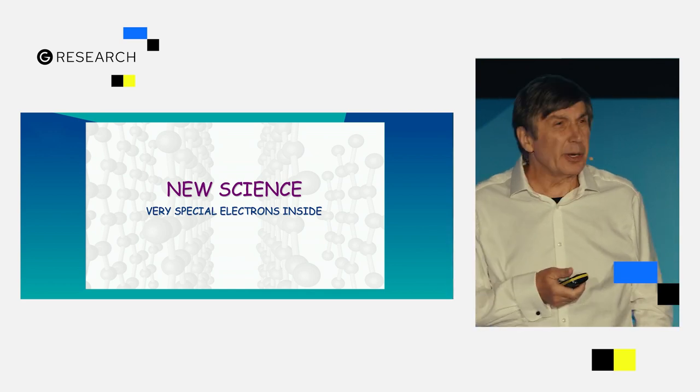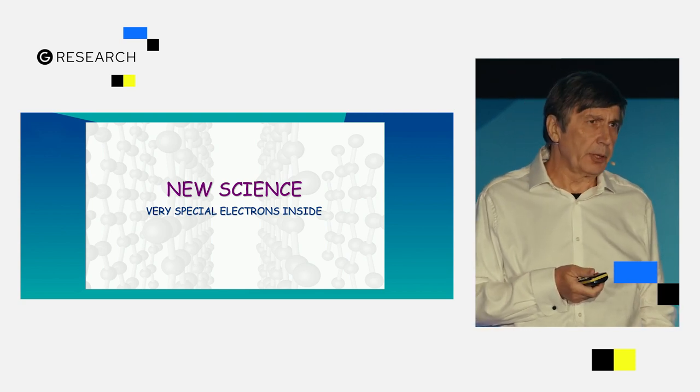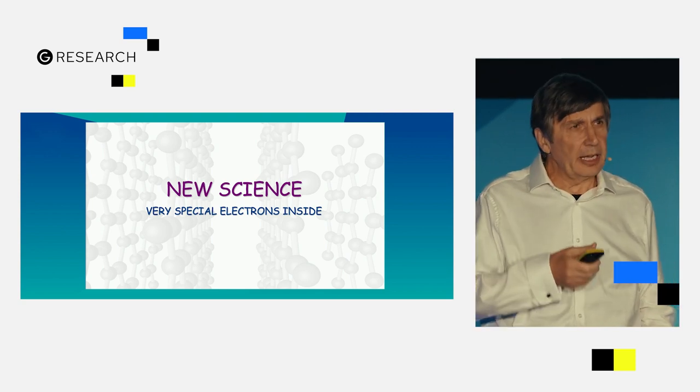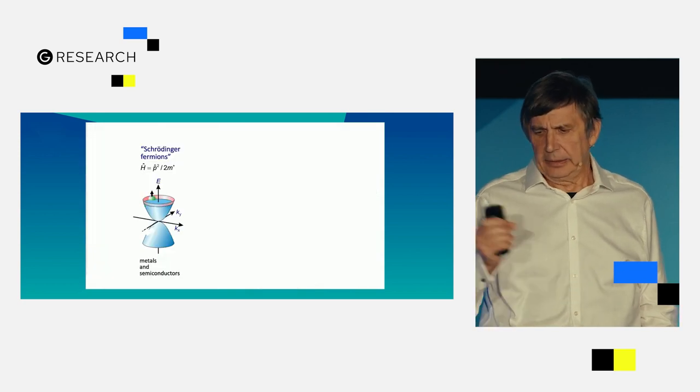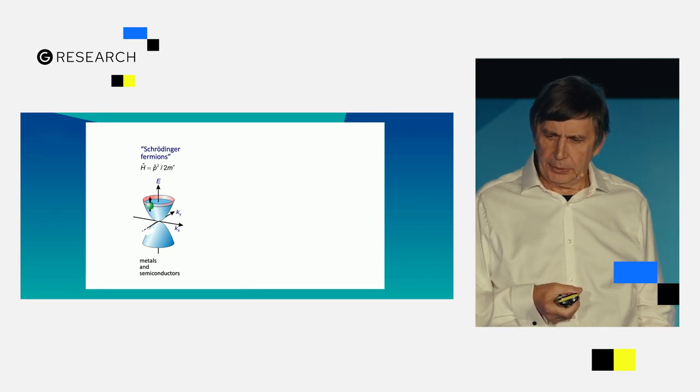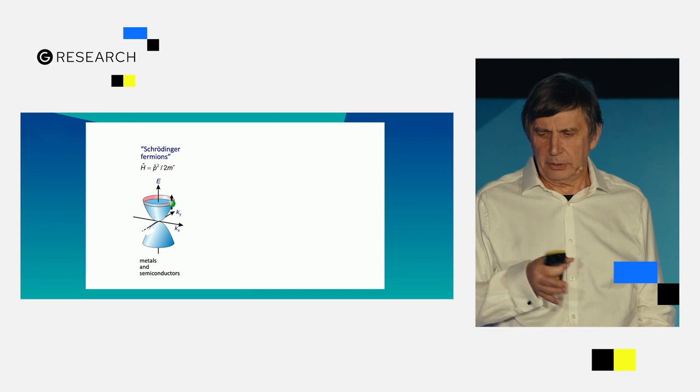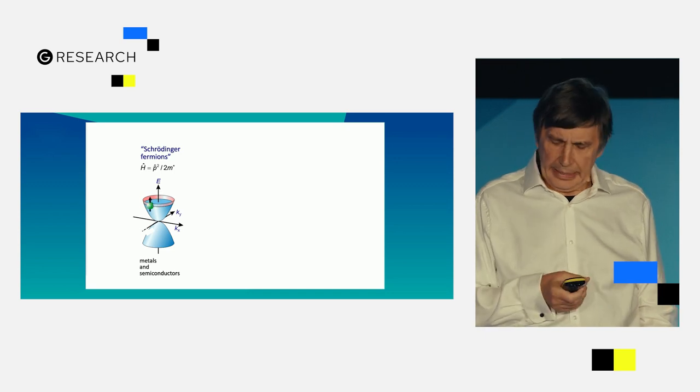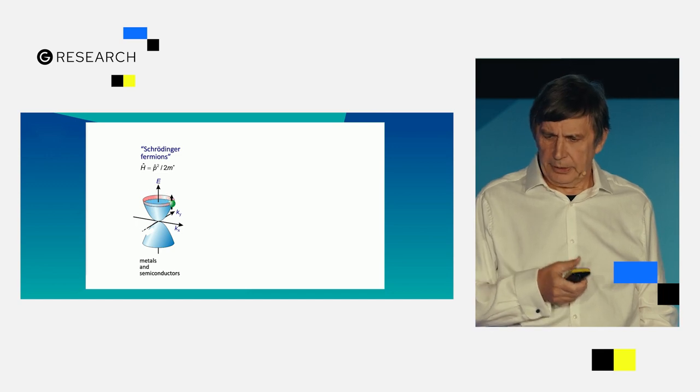That was the biggest surprise. The Nobel Prize was actually given probably mostly for electronic properties of graphene. How electrons behave inside. I don't have formulas in my talk, except for this slide. Apparently. So let me explain.